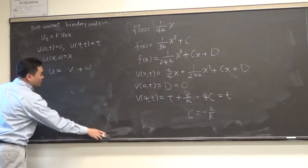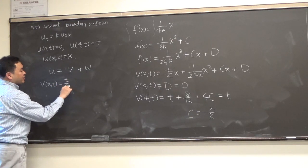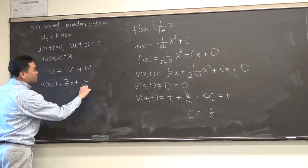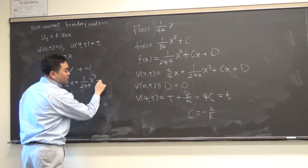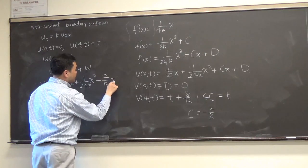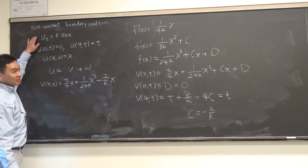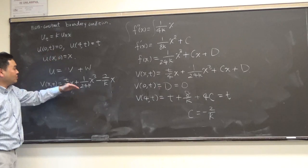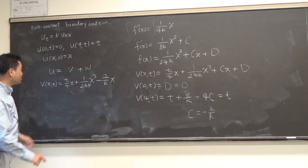Okay? Then you plug all these back in and here's what we have. We see that v of x,t must be t over 4x plus 1 over 24k x cubed and then minus 2 over k x. Guess what this does? It satisfies the heat equation. It satisfies the left boundary condition. This satisfies the right boundary condition. Perfect.